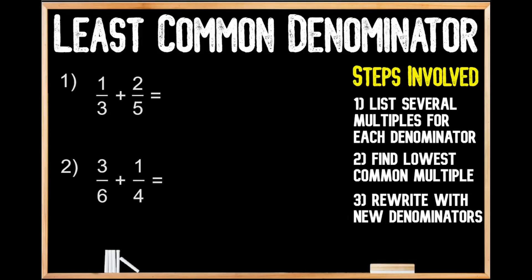In question number one, we're being asked to add one-third plus two-fifths. In order for us to work through this problem, we need to find a common denominator. So let's follow the steps on the right-hand side here so we can figure out the least common denominator for these two fractions. Our first step is to list several multiples for each denominator.